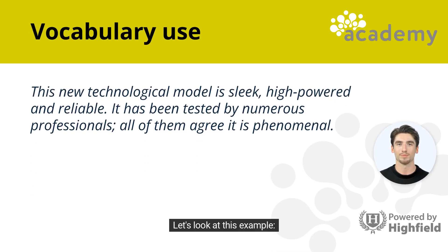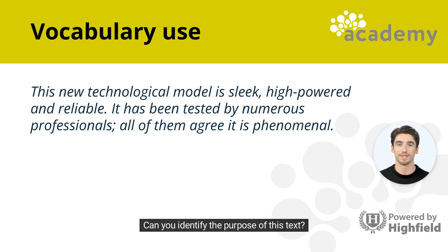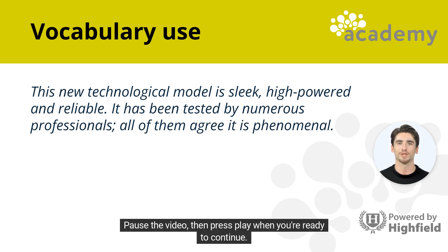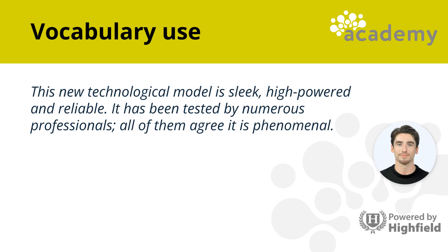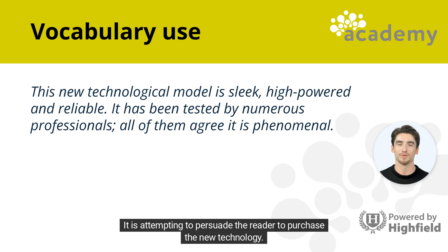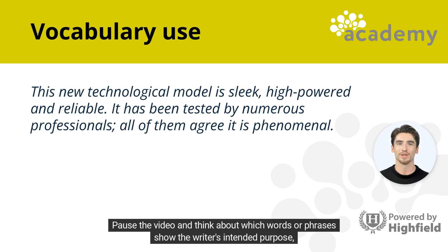Let's look at this example: 'This new technological model is sleek, high-powered, and reliable. It has been tested by numerous professionals. All of them agree it is phenomenal.' Can you identify the purpose of this text? Is it instructing, describing, persuading, or explaining? Pause the video, then press play when you're ready to continue. The purpose of this text is to persuade — it is attempting to persuade the reader to purchase the new technology. Pause the video and think about which words or phrases show the writer's intended purpose.